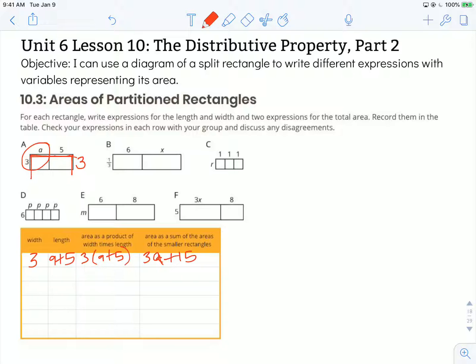Let's look at Rectangle B. We have a width of 1/3 and a length of 6 and x, so 6 plus x. We could write that as 1/3 times (6 plus x). Again, using parentheses so that entire length is kept together.